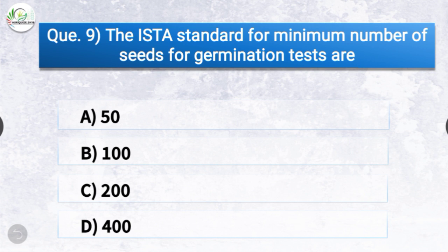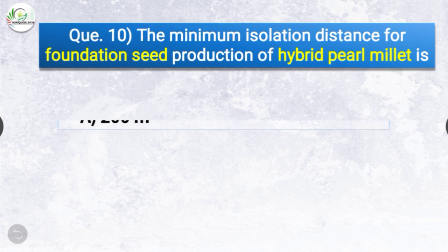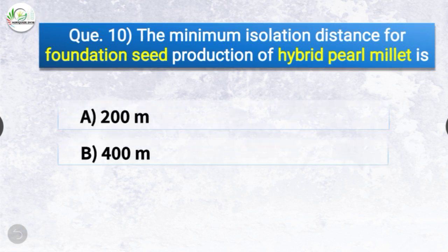Question number nine: The ISTA standard for minimum number of seeds for germination tests — the options are 50, 100, 200, or 400. The correct answer is option D — 400. The ISTA standard for minimum number of seeds for germination tests is 400.